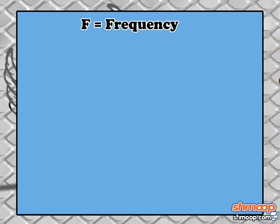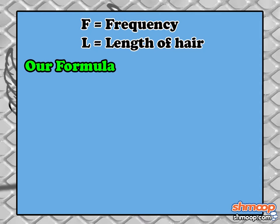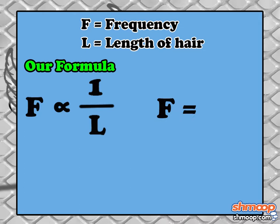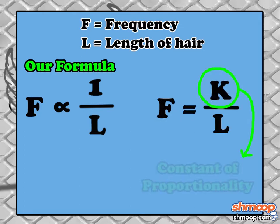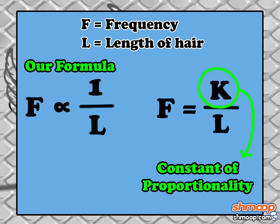We start by calling the frequency f and the length of the chest hair l. The problem tells us that the formula for the frequency f is 1 over l. So f equals k over l, where k is the constant of proportionality.